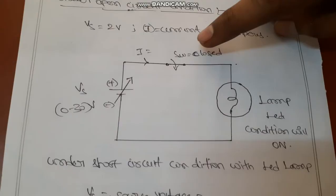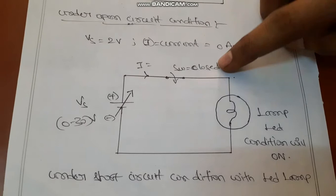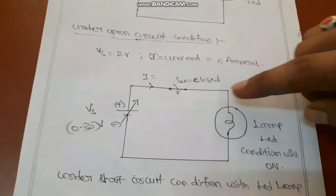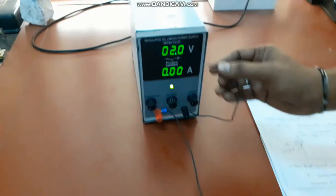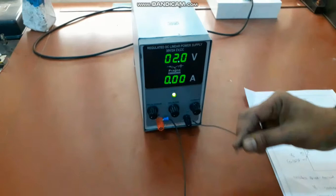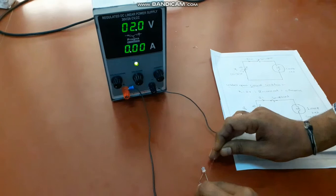Again, we conduct one more experiment. In this figure, I am closing the switch. When the switch is closed, the RPS, conducting wires, and LED lamp all form a single closed loop. Under this condition with the LED lamp, the supply voltage is set to 2 volts. I am making a short circuit with the LED lamp and the LED lamp is glowing. When the lamp is glowing, the supply voltage is 2 volts and the current flowing through the LED lamp is 0.01 amperes.